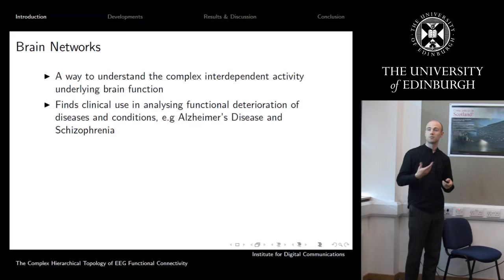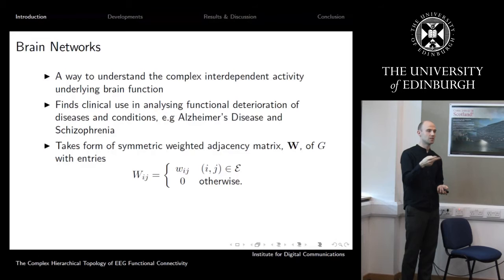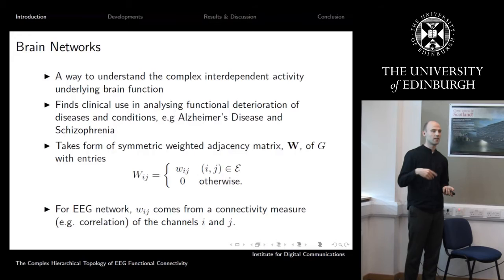Generally, we want to form a weighted adjacency matrix. For each pair of channels, we define some dependency between them — it could be correlation or something related to the phase of the signals — and that measure becomes the i-th row, j-th column entry of the matrix.